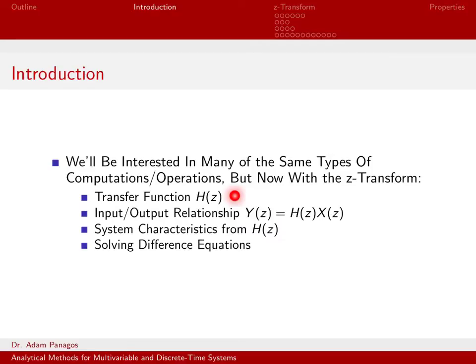The only difference is that the Laplace transform is for continuous time signals and systems, while the Z-transform is for discrete time signals and systems. One of the reasons we like the Z-transform is because it really simplifies the input-output relationship of discrete time linear time-invariant systems. In the time domain, the input-output relationship is described by convolution, which is tedious. But in the Z-domain, convolution simplifies into multiplication. We can compute the output of our system as the product of the input X(Z) with the transfer function H(Z).